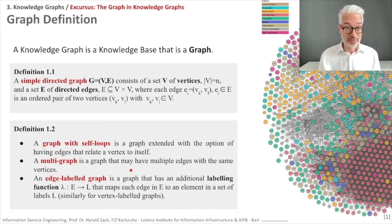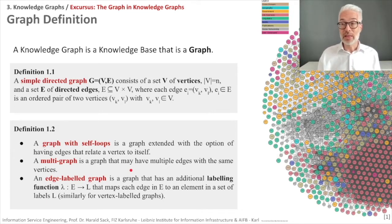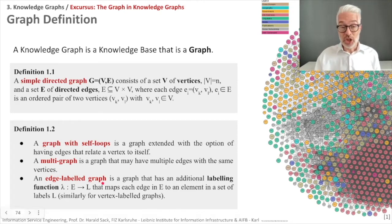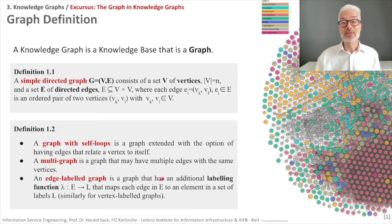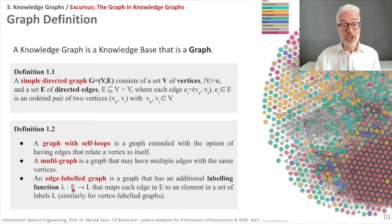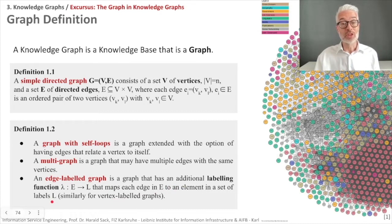A knowledge graph may have self-loops, where a vertex relates to itself. It can also be a multigraph, because between two vertices there can be multiple edges. It is an edge-labeled graph because all edges have a label, meaning the graph has a labeling function — here called lambda — that maps each edge in set E to an element in a set of labels L. The same holds for vertex-labeled graphs if vertices also have labels.